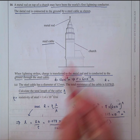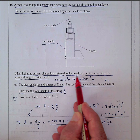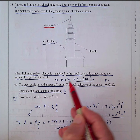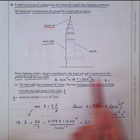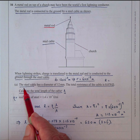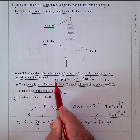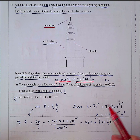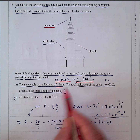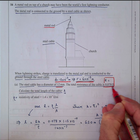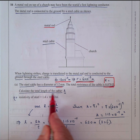When the lightning strikes, charge is transferred to the metal rod and conducted to the ground through the steel cable. The steel cable has a diameter of 12 millimetres, that's 12×10⁻³ metres, giving a radius of 6×10⁻³ metres. The total resistance of the cable is given as 0.078 ohms — that's R.